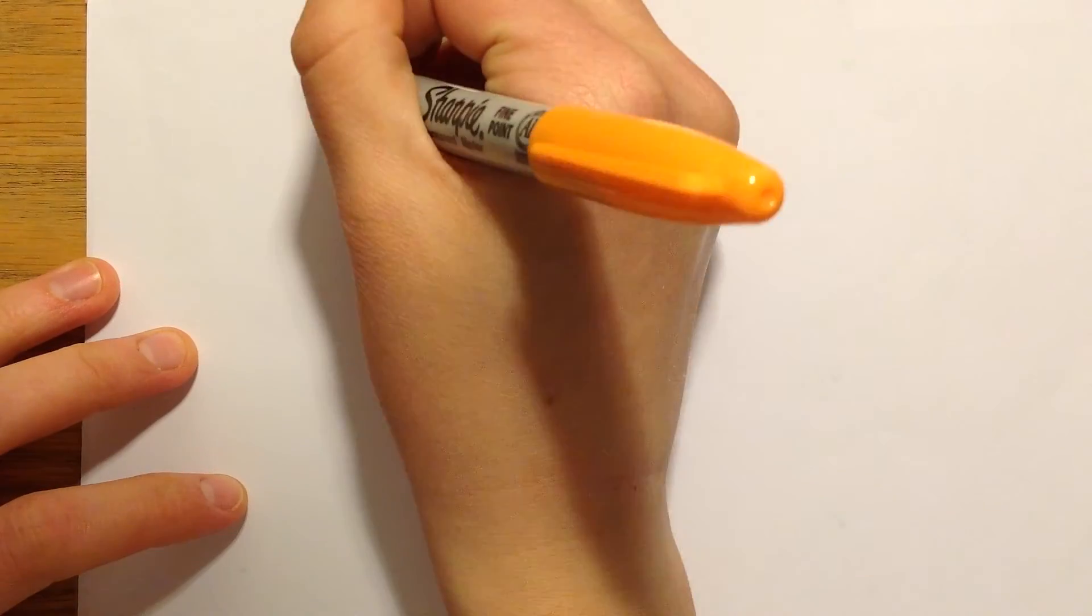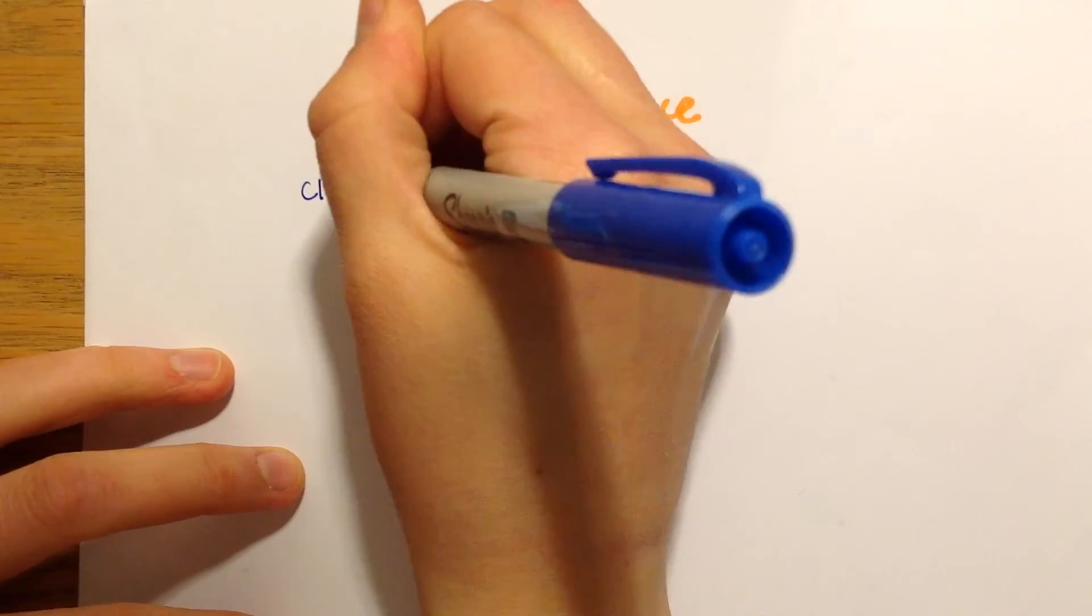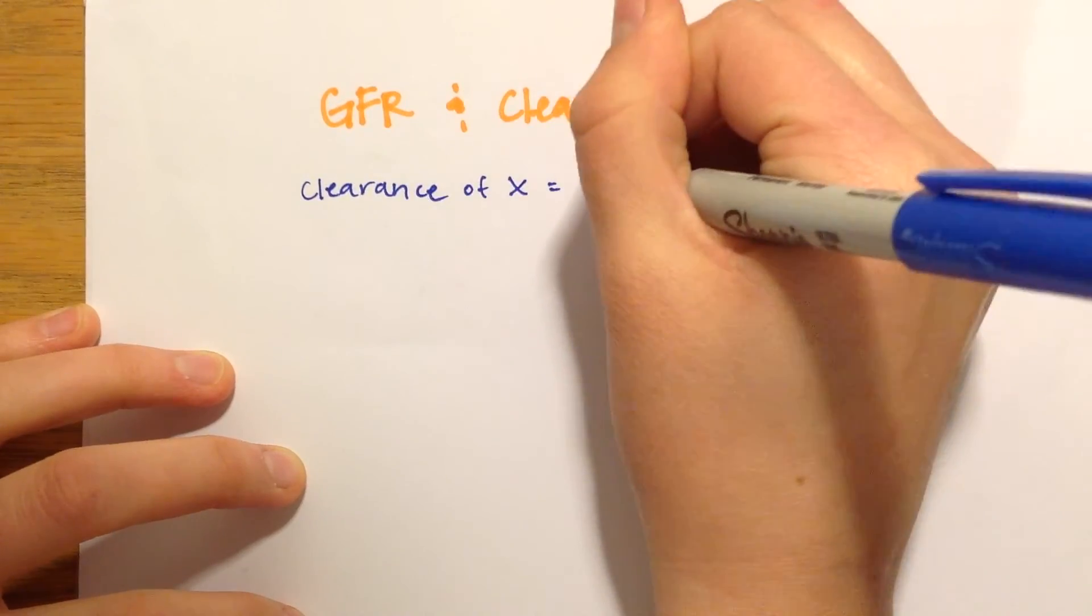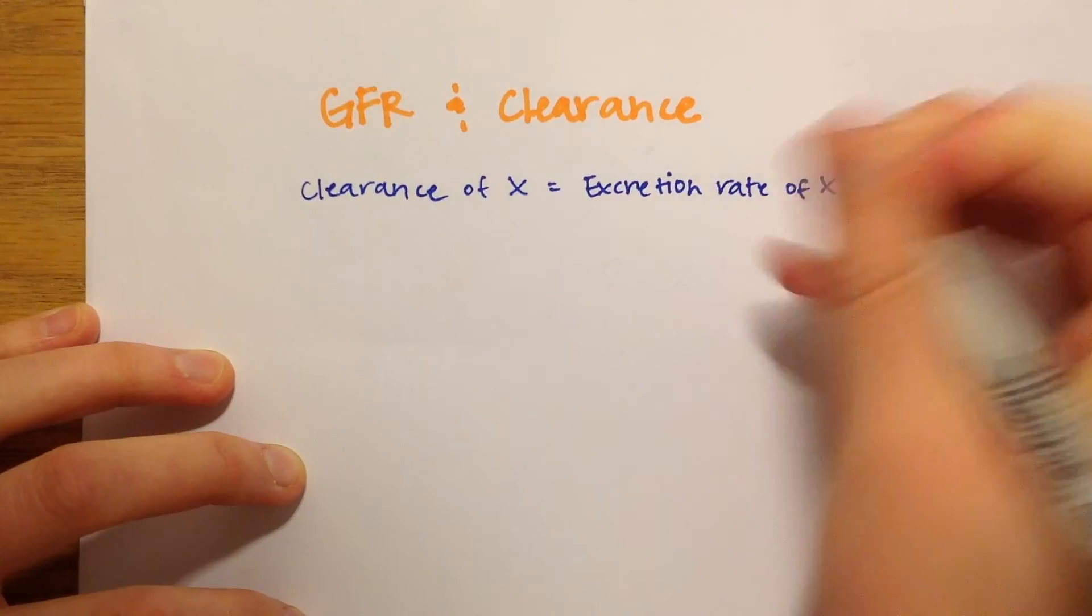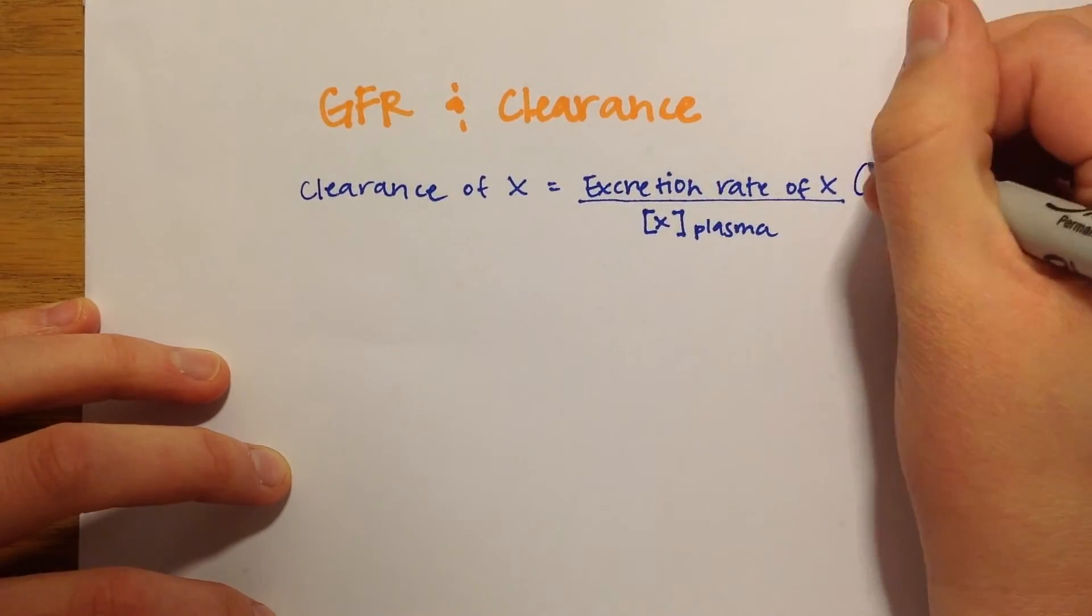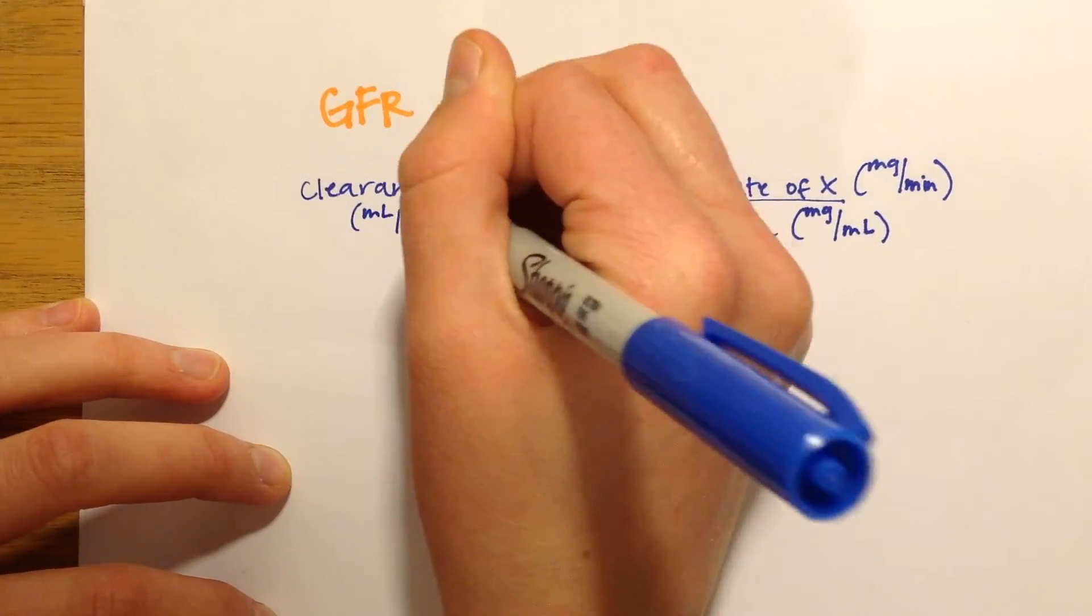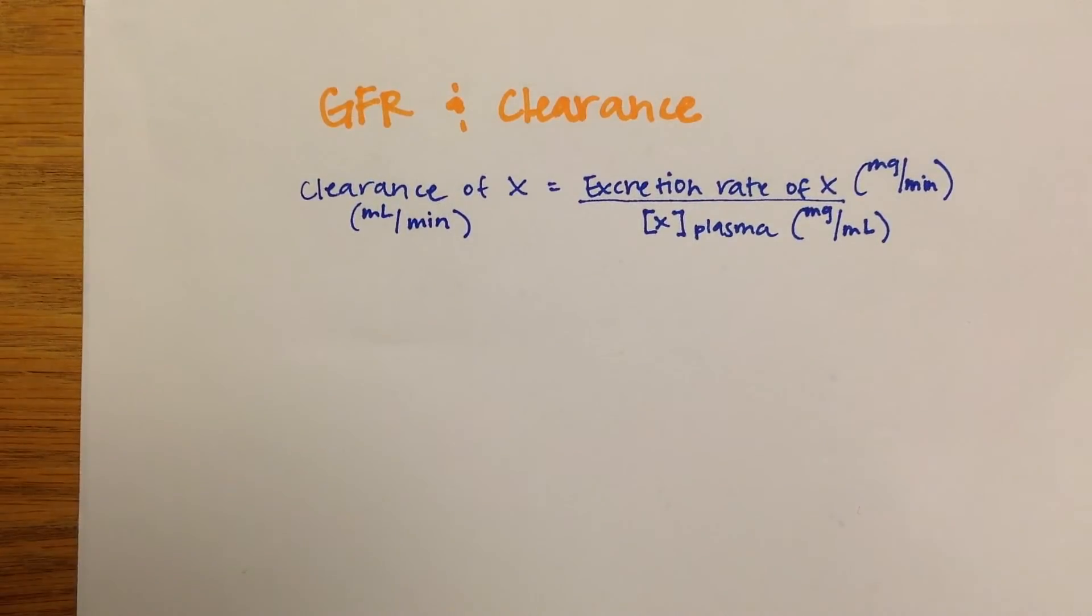We will use inulin as an example for our calculations, because it is a substance that is neither reabsorbed or secreted in the kidney, it just stays in the tubule. The clearance of a substance X is calculated by taking the excretion rate of a substance, how much of it is leaving the body, and dividing it by the concentration of the substance in the plasma. Remember that excretion rate is the volume of the urine multiplied by the concentration of the substance in the urine.